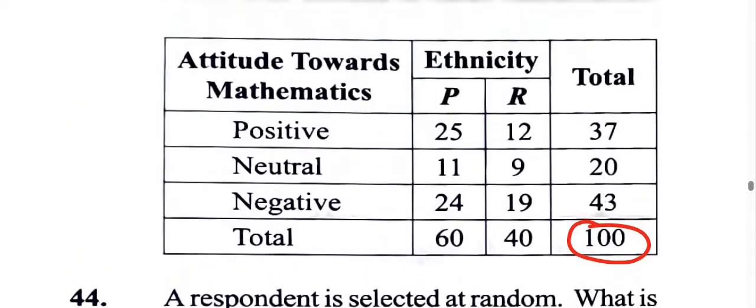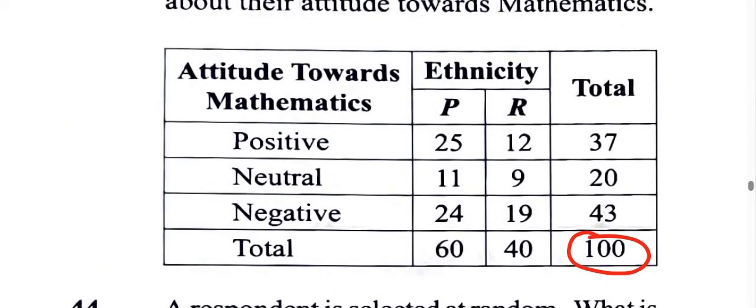And so we look at ethnic group P, right? So this is ethnic group P here and having a positive attitude towards math. So that would be 25 persons who are part of ethnic group P and have a positive attitude towards math.